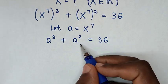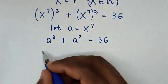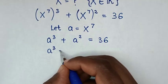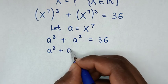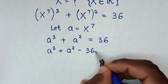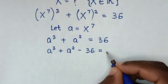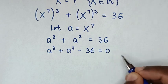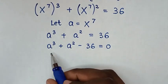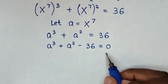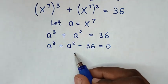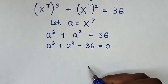We take 36 to the left side, so it becomes a power of 3 plus a power of 2 minus 36 is equal to 0. In the next step, we solve this cubic equation by grouping and factorization.